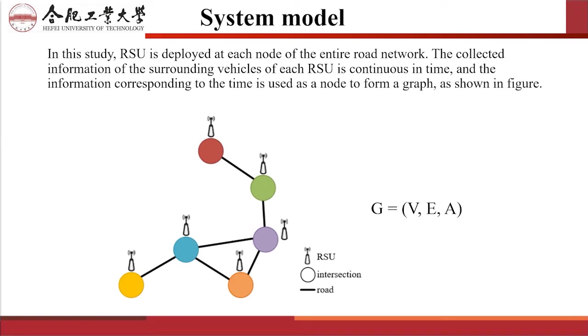In this study, RSU is deployed at each node of the entire road network. The collected information of surrounding vehicles for each RSU is continuous in time, and the information corresponding to the time is used as a node to form a graph, as shown in the figure. The straight line represents the road in the city, the cycles present the nodes where roads intersect, and the RSU is deployed around each intersection. We define our traffic network as an undirected graph G, which includes V, E, and A, where V is a finite set of N nodes, E is a set of edges indicating connectivity between nodes, and A denotes the adjacency matrix.